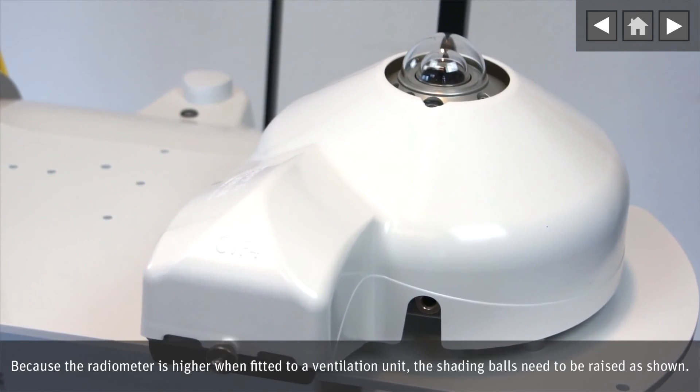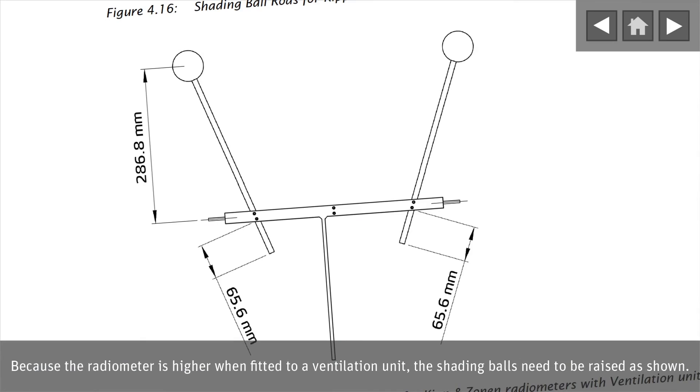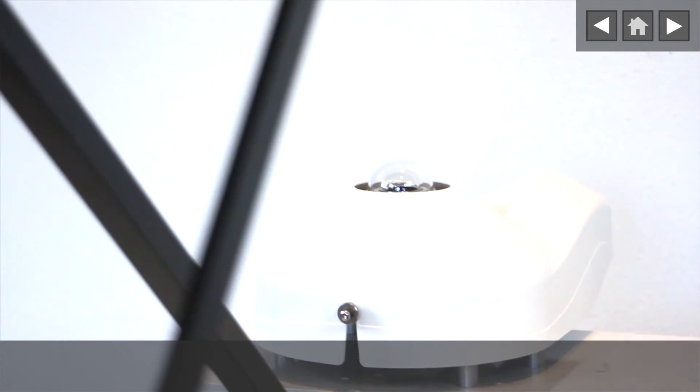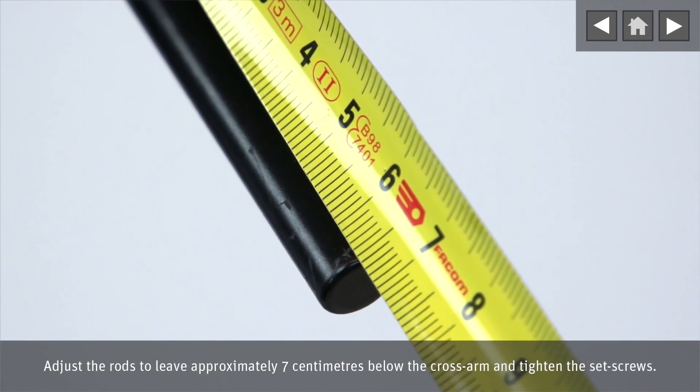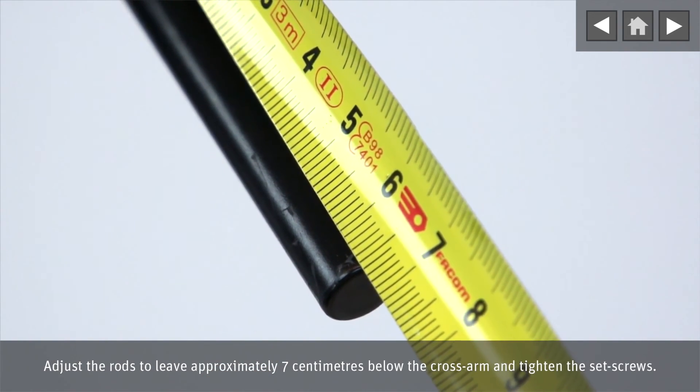Because the radiometer is higher when fitted to a ventilation unit, the shading balls need to be raised as shown. Adjust the rods to leave approximately 7 cm below the cross arm and tighten the set screws.